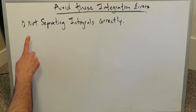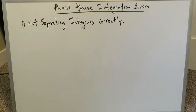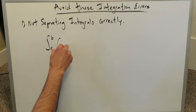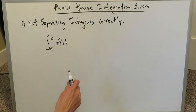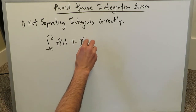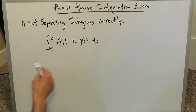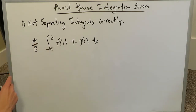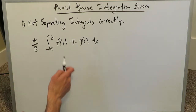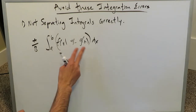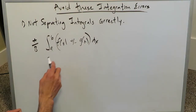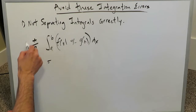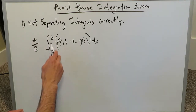The first error is not separating your integral expression correctly. If you have an integral from a to b that contains a sum or difference of functions — whether positive or negative — and you also have some sort of coefficient, when you expand this you have to do it correctly. Separating integrals correctly requires you not to forget the coefficient, as well as not forgetting how to separate things properly with regards to their intervals.